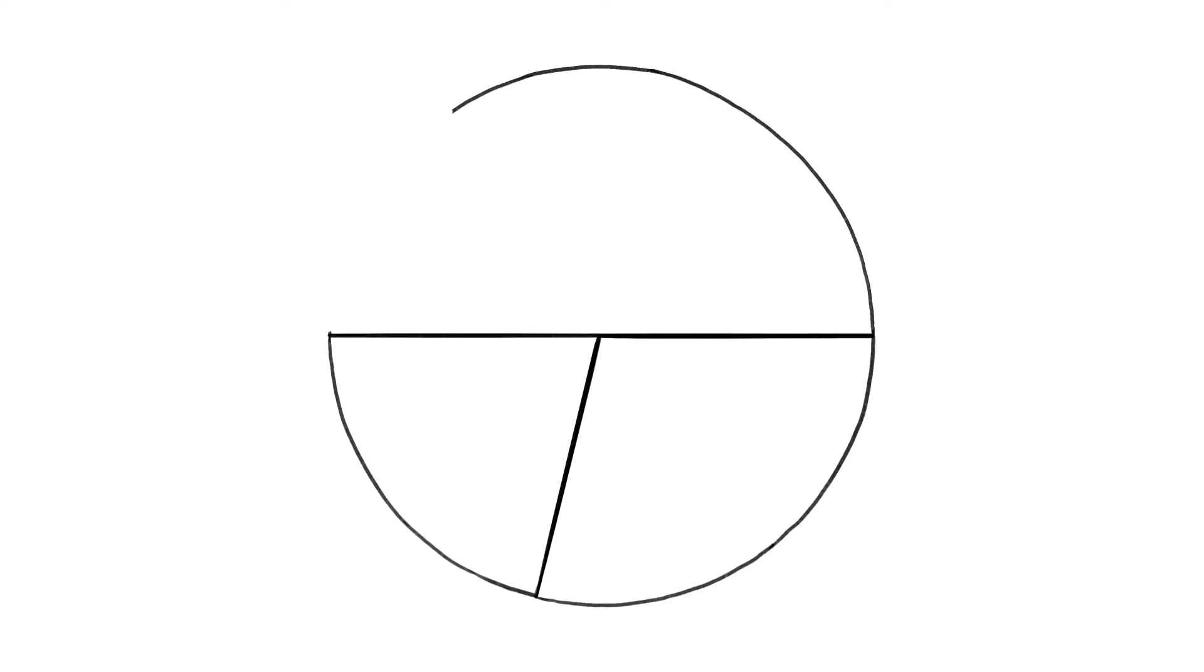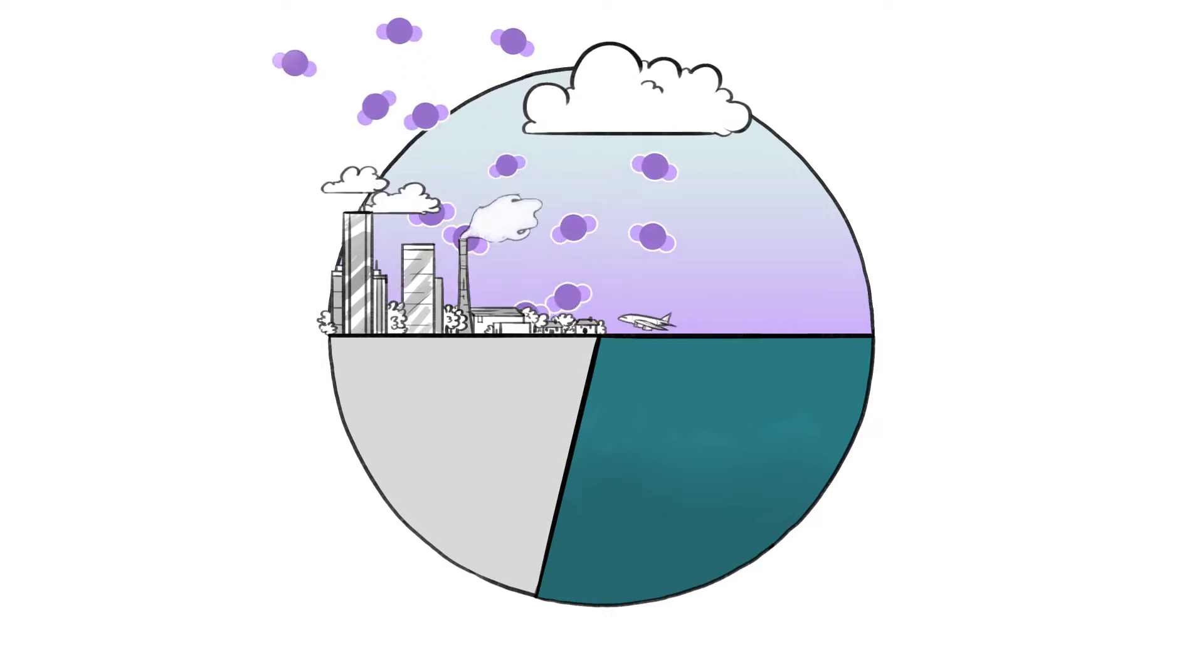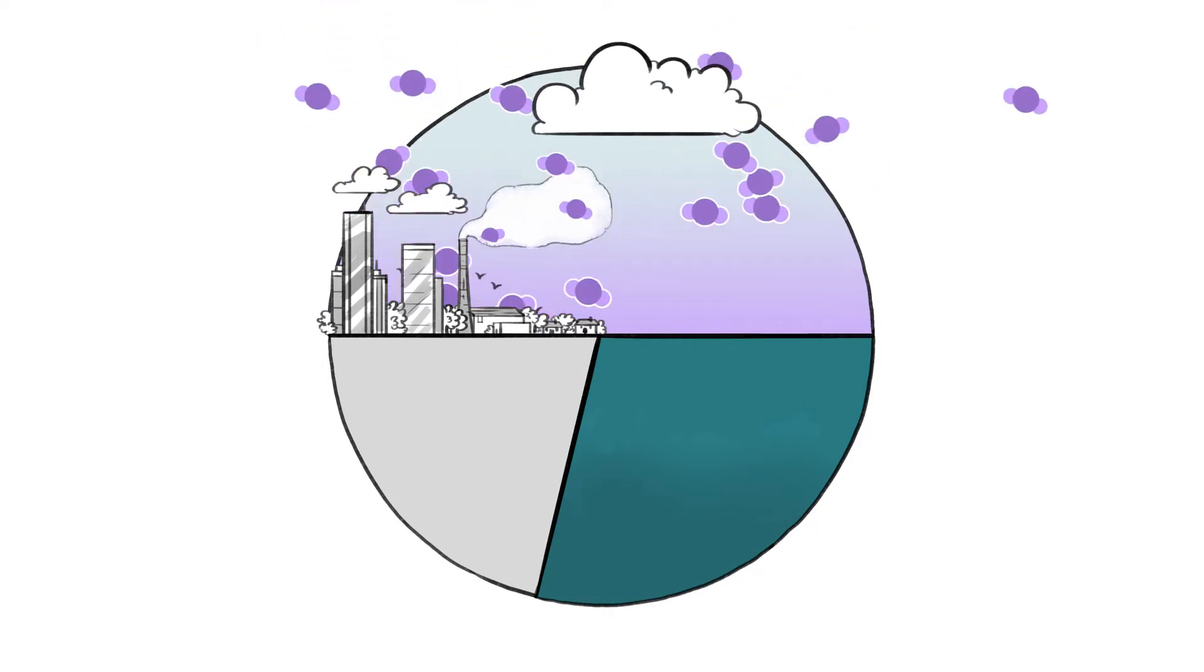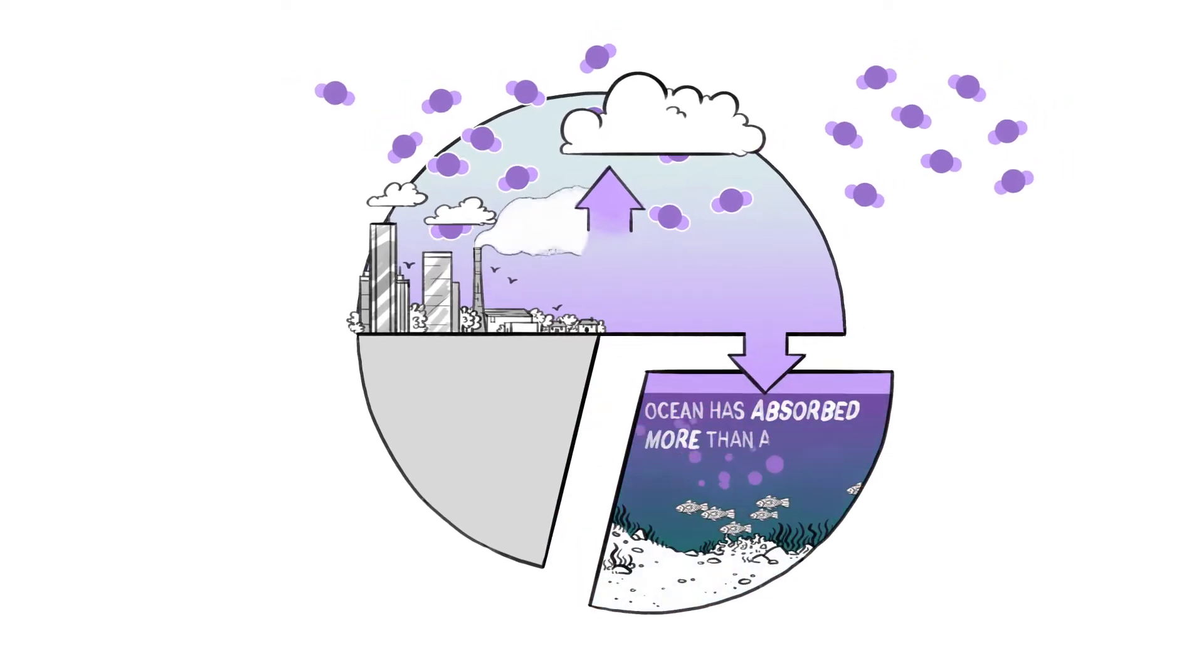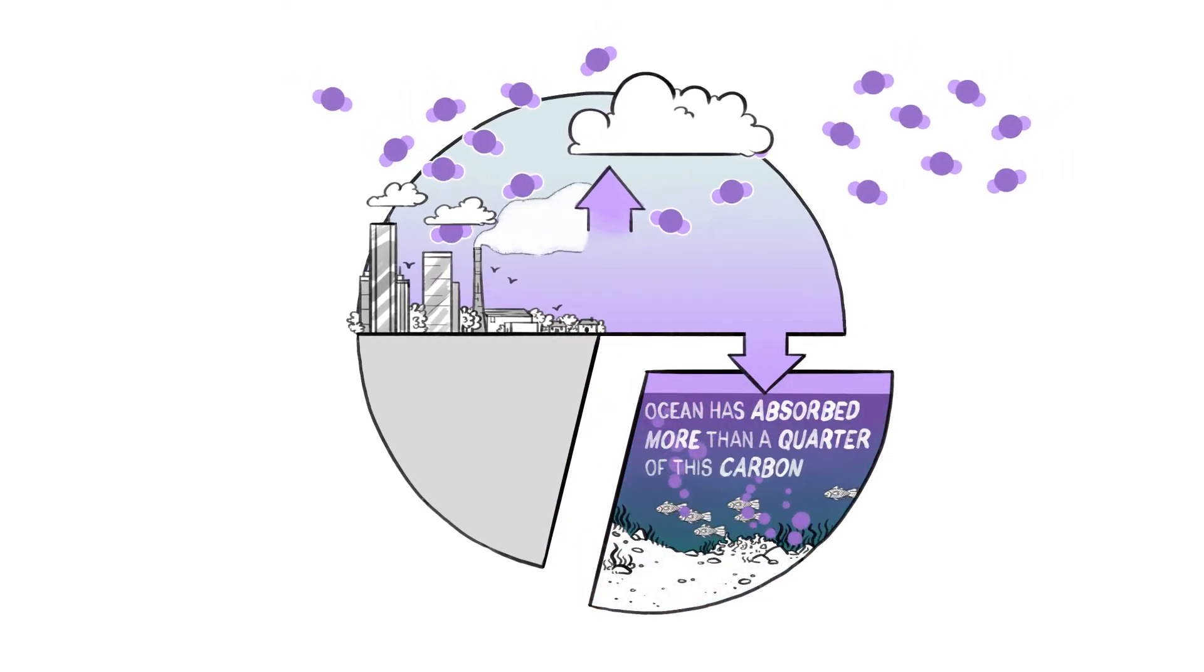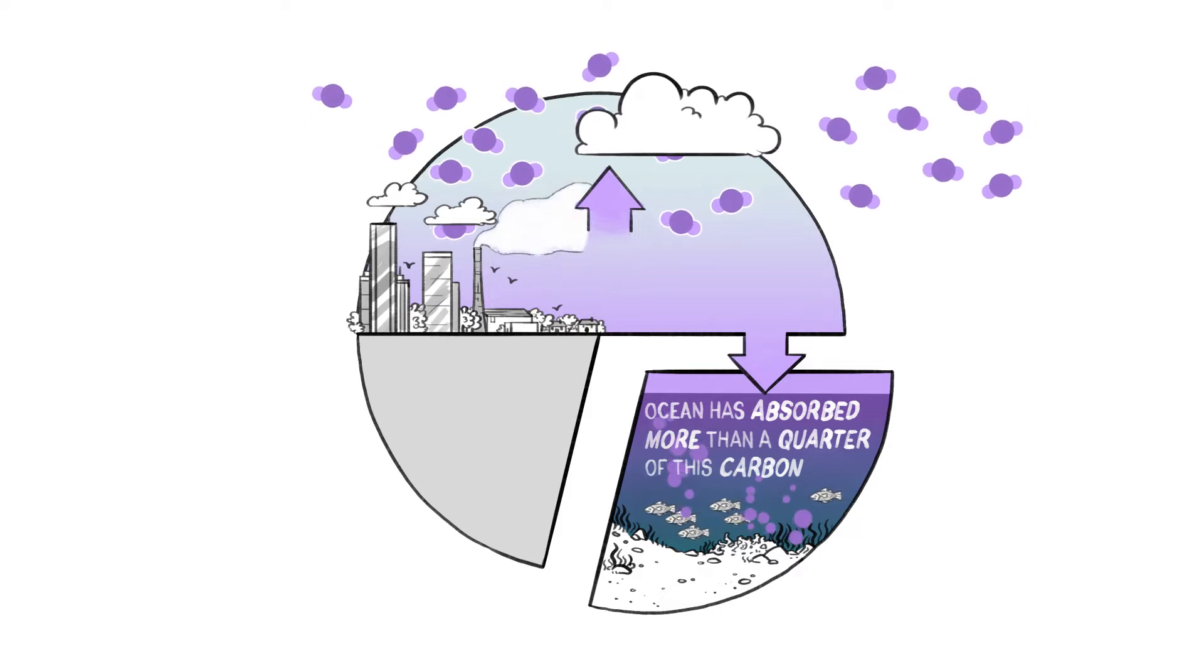Over the past 200 years, we have built a globalized economy based on fossil fuels and added 555 billion tonnes of CO2 to the atmosphere. The ocean has absorbed more than a quarter of this carbon, thereby increasing seawater acidity by 30%.